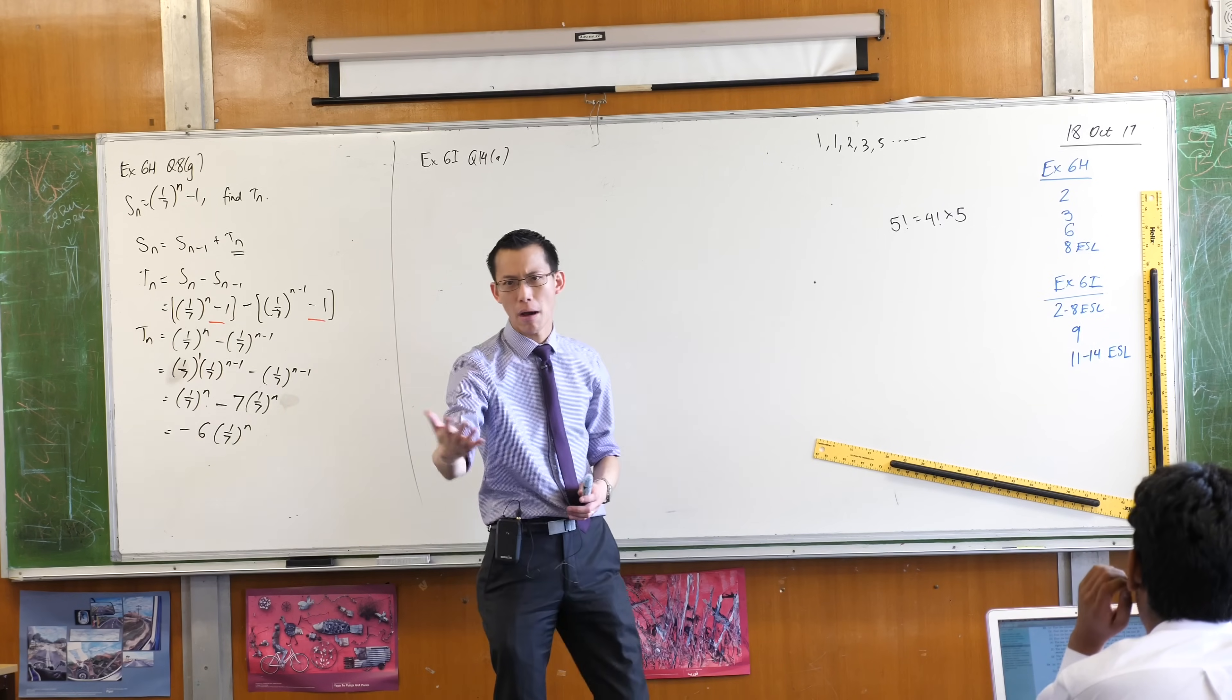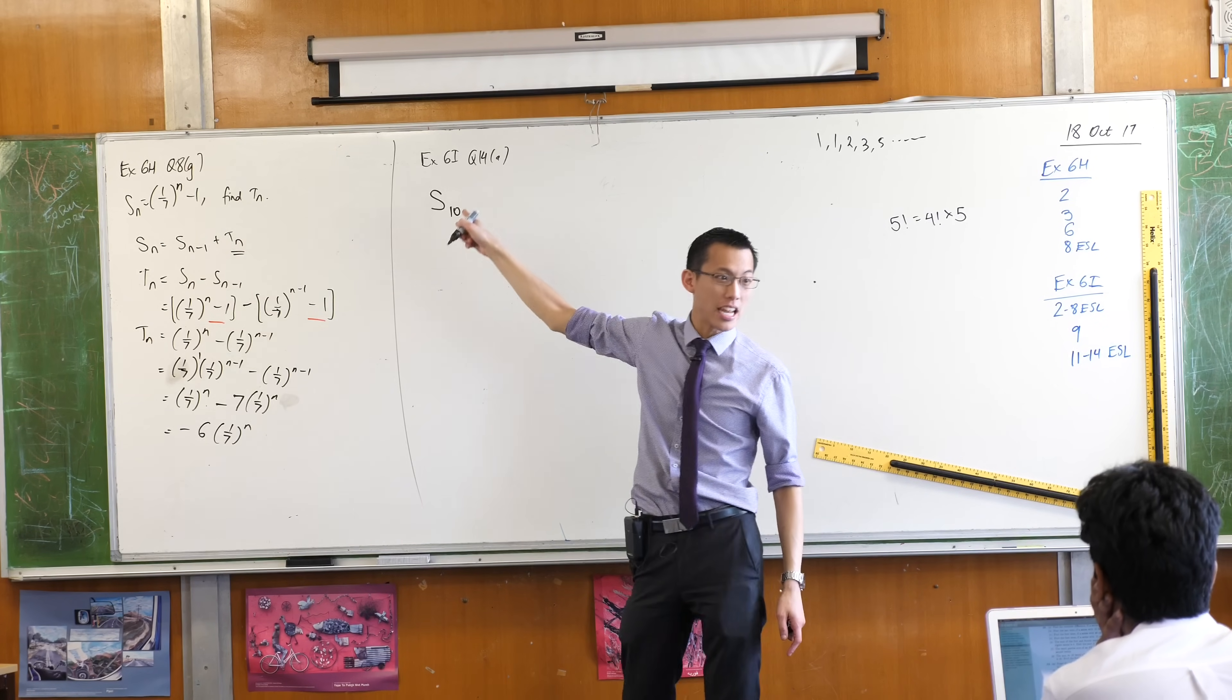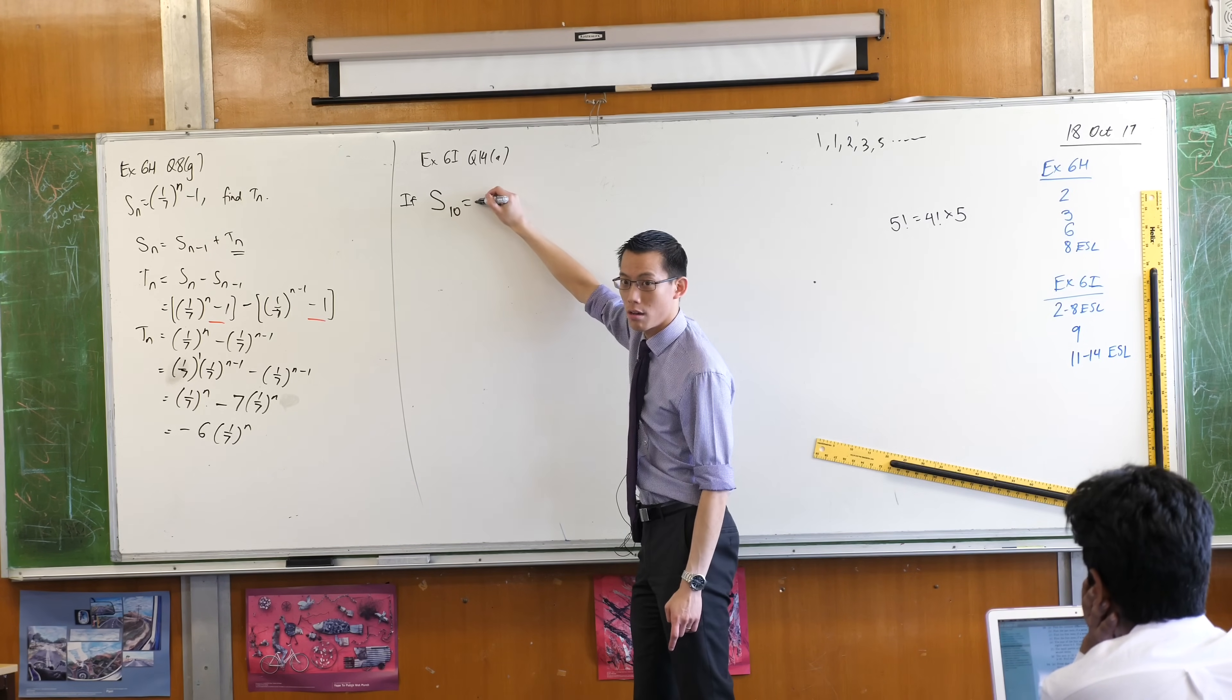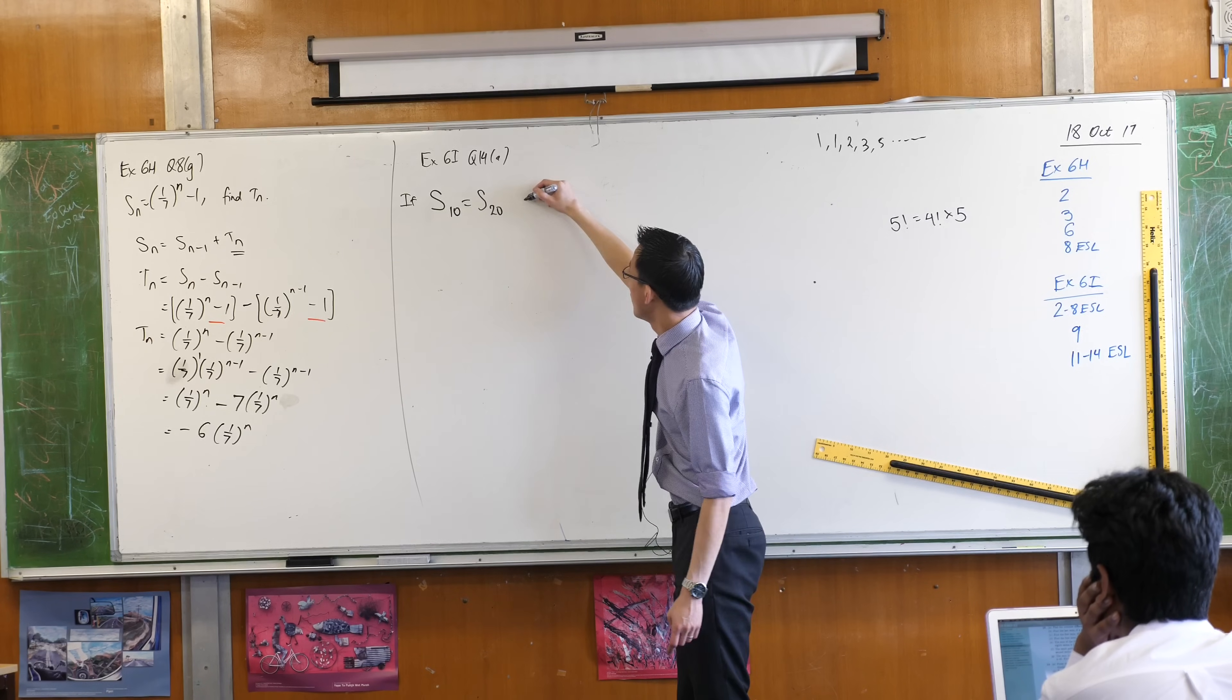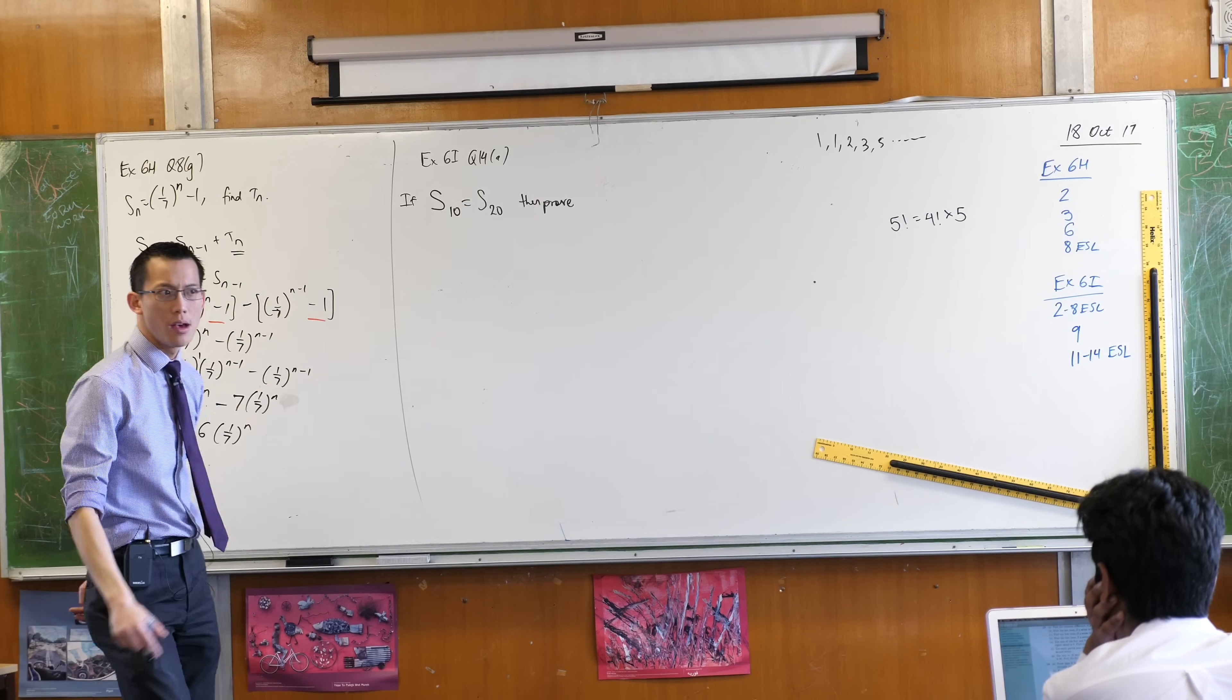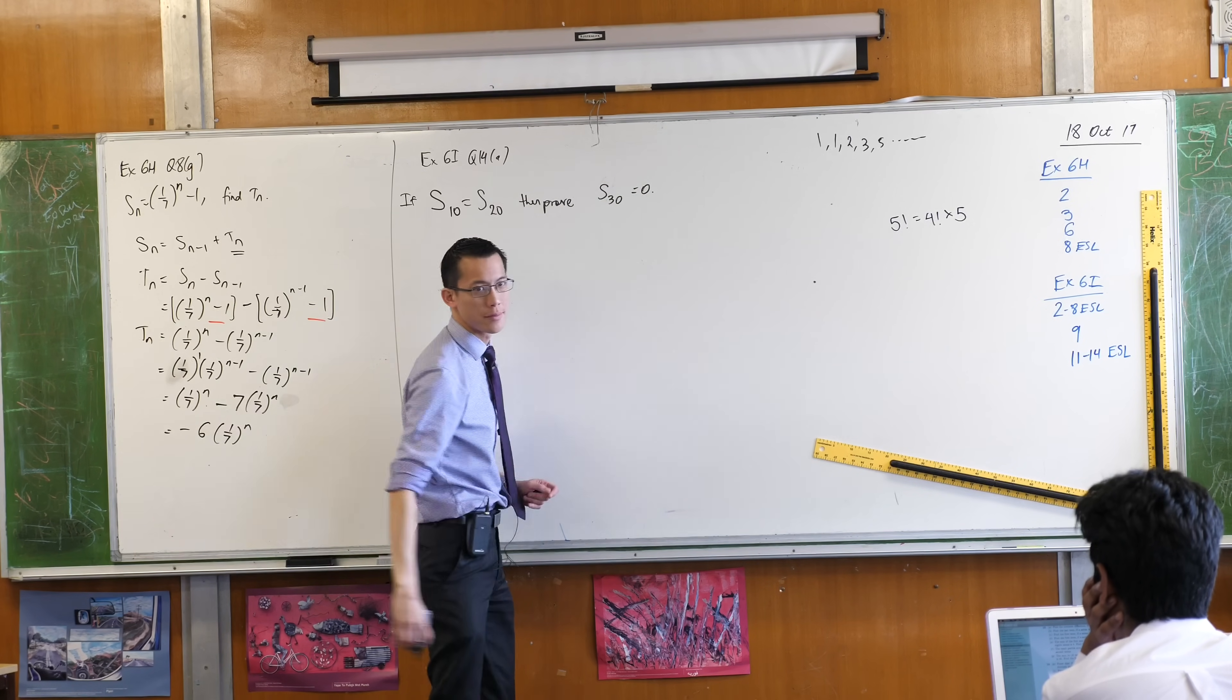Well we have language to say the 10th partial sum. We would say the partial sum up to term 10. That's the 10th partial sum. They're saying if that 10th partial sum is equal to the 20th partial sum, if those really are equal, then prove what? What is it that we're required to prove? The 30th one is zero. Prove that the 30th one is zero.